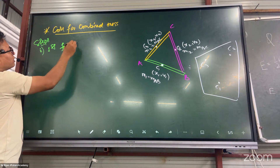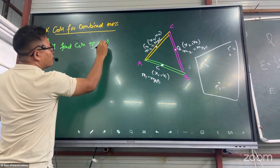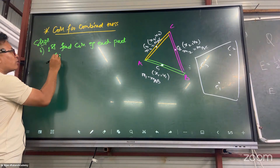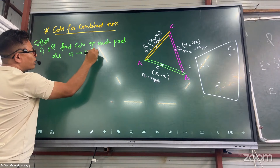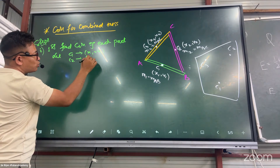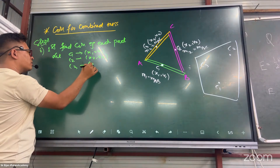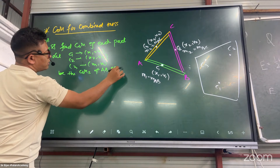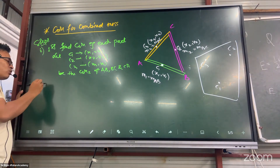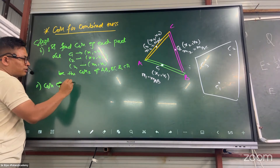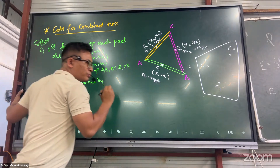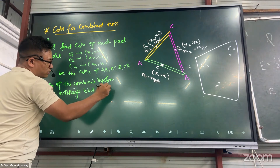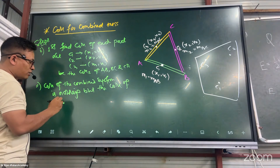First, find the central mass of each part of the combined part — the central mass. Let's look at C1: x1, y1. Then C2: x2, y2. C3: x3, y3. The center of masses — COM of A, B, and CA. Now, the center of mass of the combined system is nothing but the central mass of C1, C2, and C3.